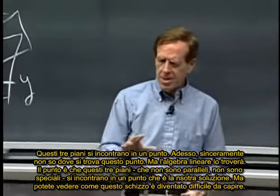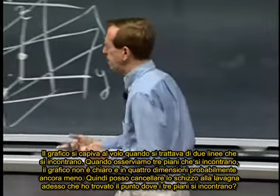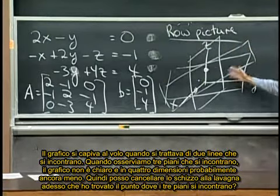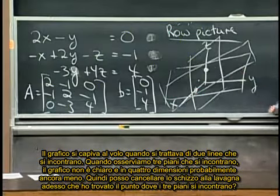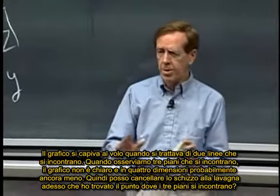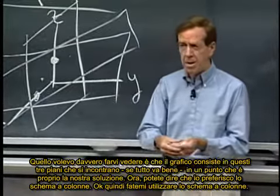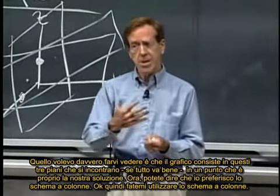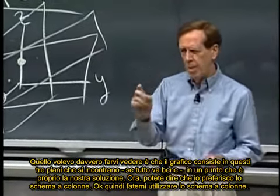But maybe you can see that this row picture is getting a little hard to see. The row picture was a cinch when we looked at two lines meeting. When we look at three planes meeting, it's not so clear, and in four dimensions, probably a little less clear. So, can I quit on the row picture? I'll quit on the row picture before I've successfully found the point where the three planes meet. All I really want to see is that the row picture consists of three planes, and, if everything works right, three planes meet in one point, and that's the solution.